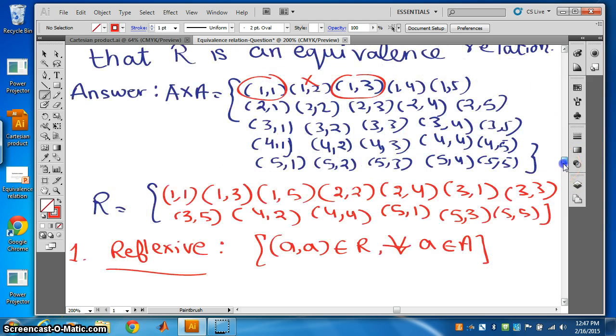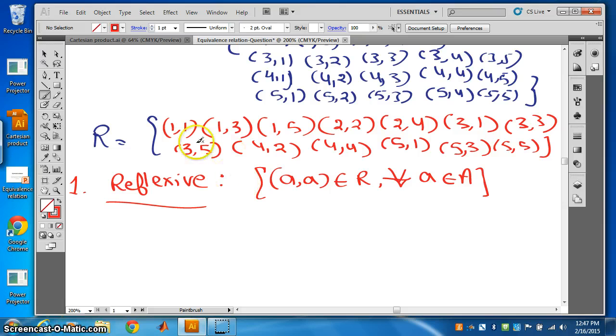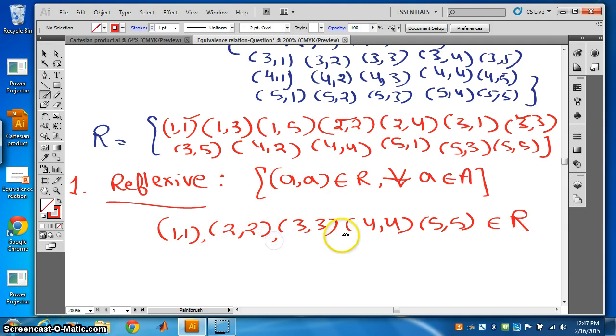See, this is the property: (a,a) belongs to R for all a in set A. Now in set A the elements are 1, 2, 3, 4, 5. So check what is (a,a). Do we have all (a,a)? (1,1), correct? Is there? (2,2). Then (3,3), (4,4), correct? And (5,5). All belongs to R. There is no element left in A in which (a,a) does not belong to R. See, all are there. Therefore we say R is reflexive.